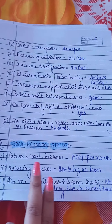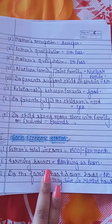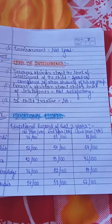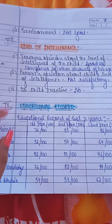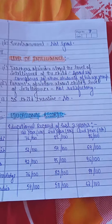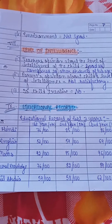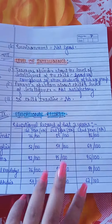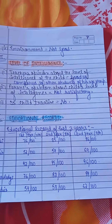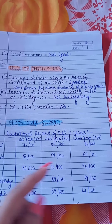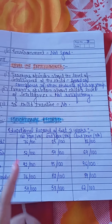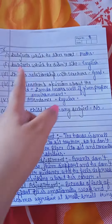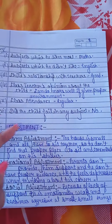Then we will also write social economic status — what is father's income, what is the earning source, does the family have its own home, how is the environment at home. Then the level of intelligence — you will ask 2-3 questions about his level of intelligence. Then comes educational record — for the last 3 years. For example, if the adolescent is in 10th class, we write the record for 9th, 8th, and 7th class with subjects.